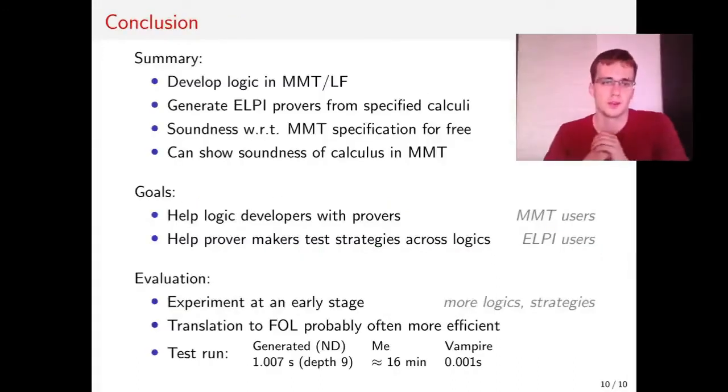So to summarize, we can use LF to describe different logics, and we've shown you an experiment on how we can generate ELPI provers from the logics that we specify, so from the calculi. MMT has different mechanisms that we can use to check the soundness of the calculus, and that would carry directly into the soundness of the generated provers because the helper predicates don't change correctness. We have two different groups who would benefit from this. On one hand we have logic developers who would get free provers for experimental logics, and on the other side there are the prover makers who could just test their strategies across many different logics.